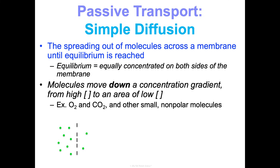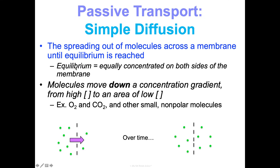Looking at this picture: the dotted line represents our selectively permeable cell membrane. Notice one side is more highly concentrated and the other is low concentration. What do we expect to happen over time? It moves from high to low until we reach equilibrium — balanced on either side of the membrane.